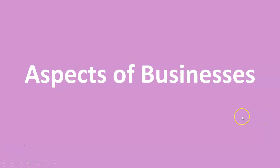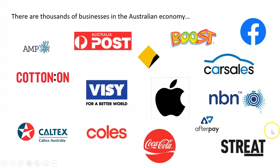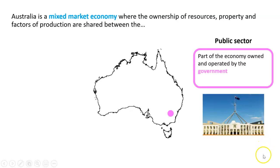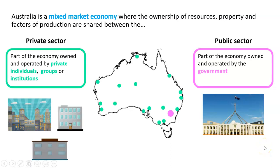Before we can look at the different types of businesses, we need to look at how they differ — their aspects. Australia is a mixed market economy, which means the ownership of resources, businesses, and properties is split between the public sector — owned and operated by government at the federal, state, and local levels — and the private sector, which is owned by private individuals, groups, or institutions.